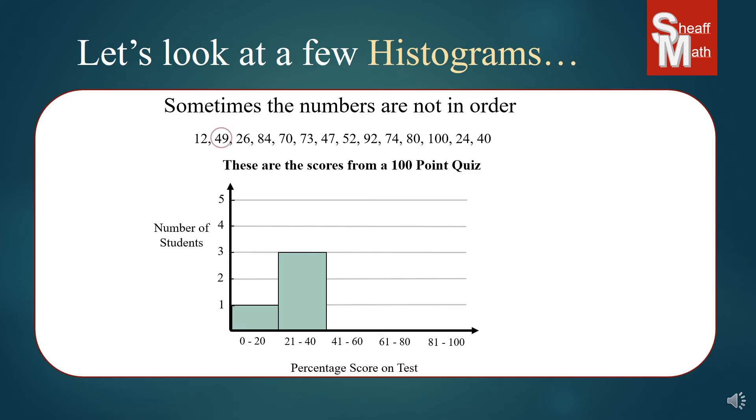From forty-one to sixty, we've got one, two, three. There's three of them. And then from sixty-one to eighty, one, two, three, four. So, we put our bar up to four. And then eighty-one to a hundred, we've got one, two, three of them.